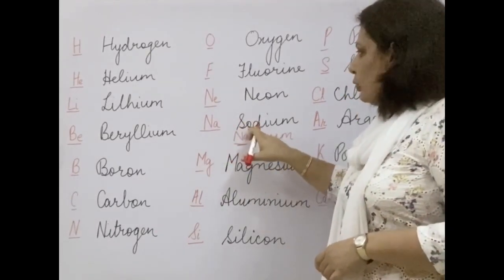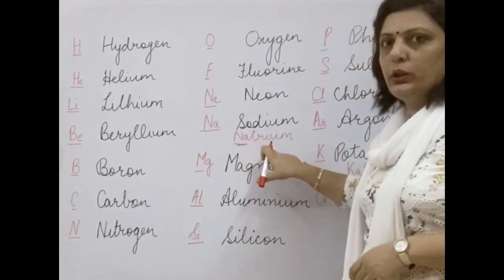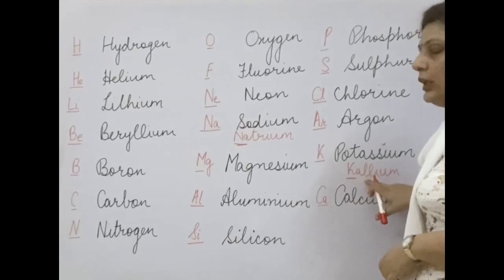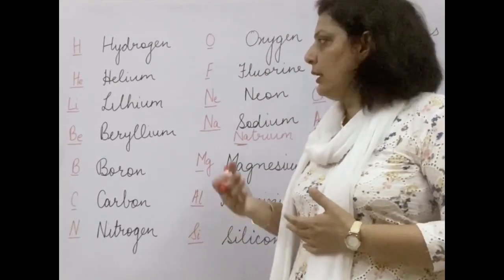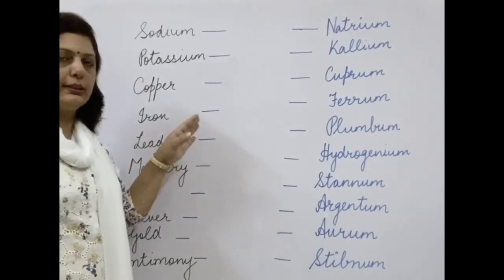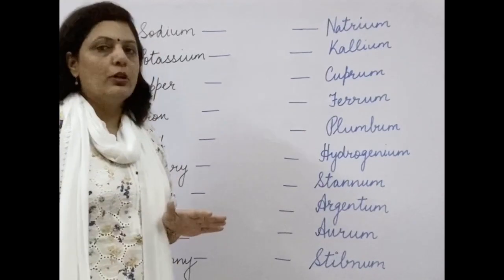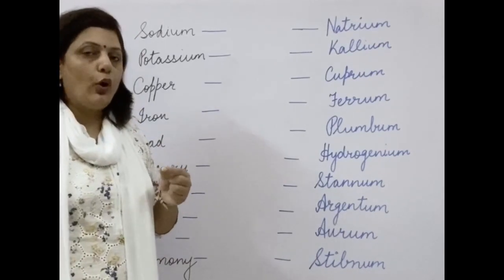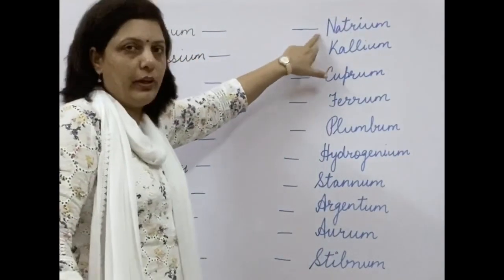There are certain anomalies. You might be confused with sodium, thinking its symbol should be S, but it is Na, derived from the Latin word natrium. Potassium is K, derived from the Latin word kalium. There are eight more such elements whose symbols are derived from Latin words. Let me tell you which ones these are — elements whose English name does not match their symbol. I'll explain the reason for each symbol.